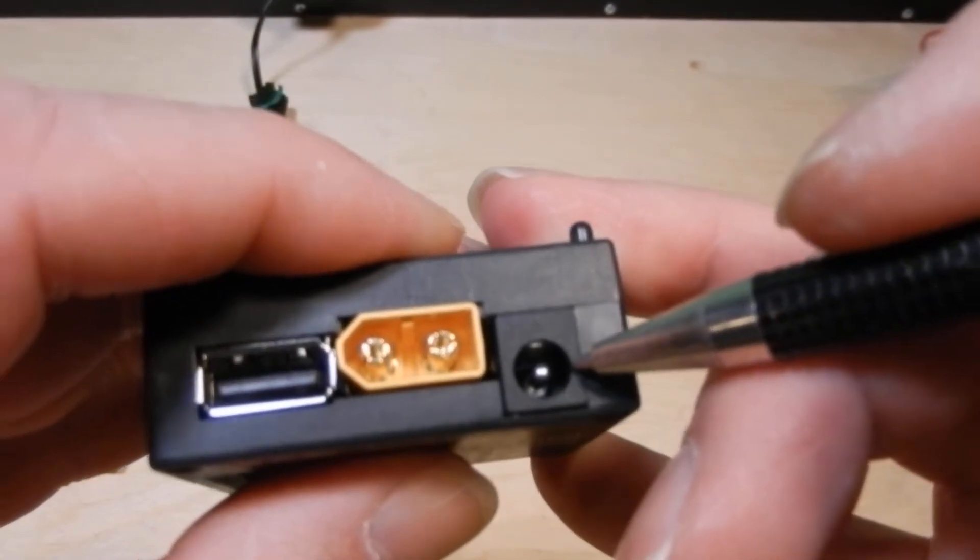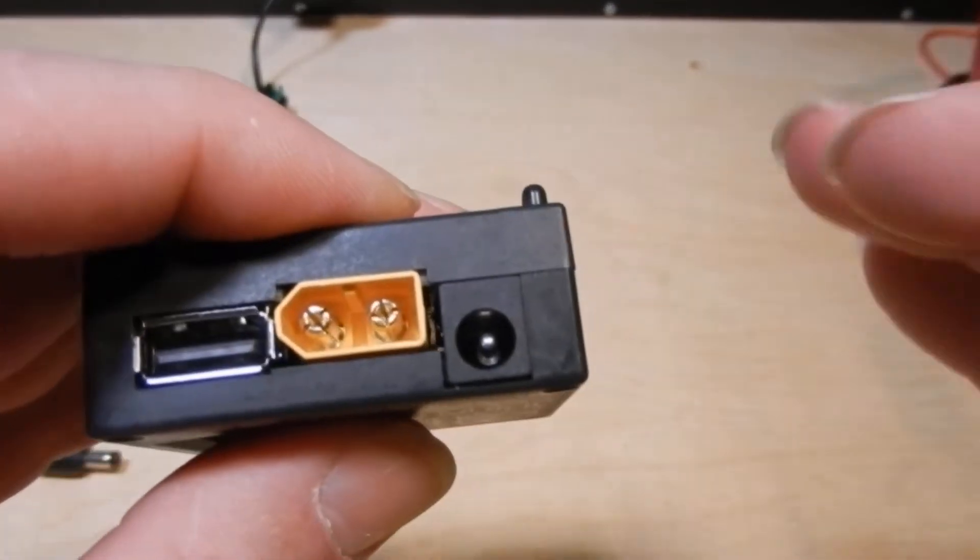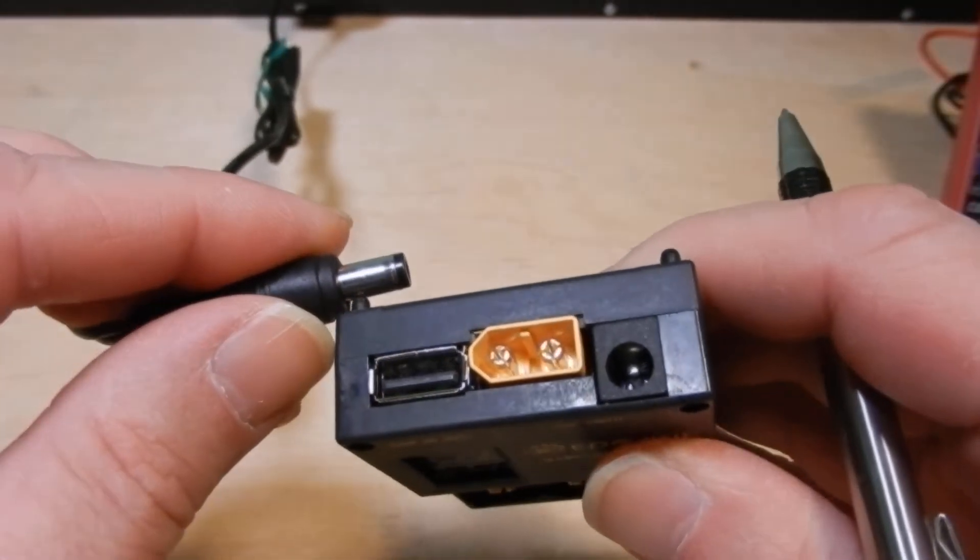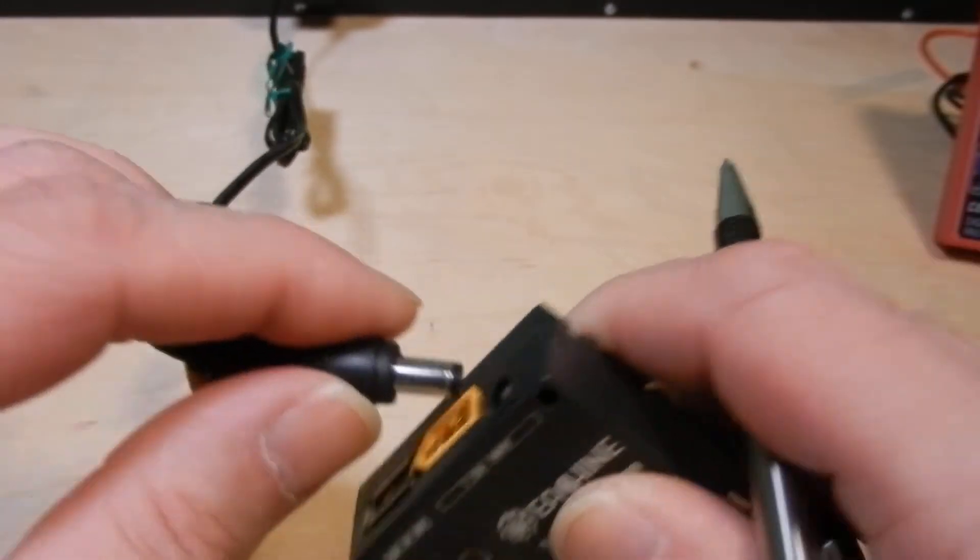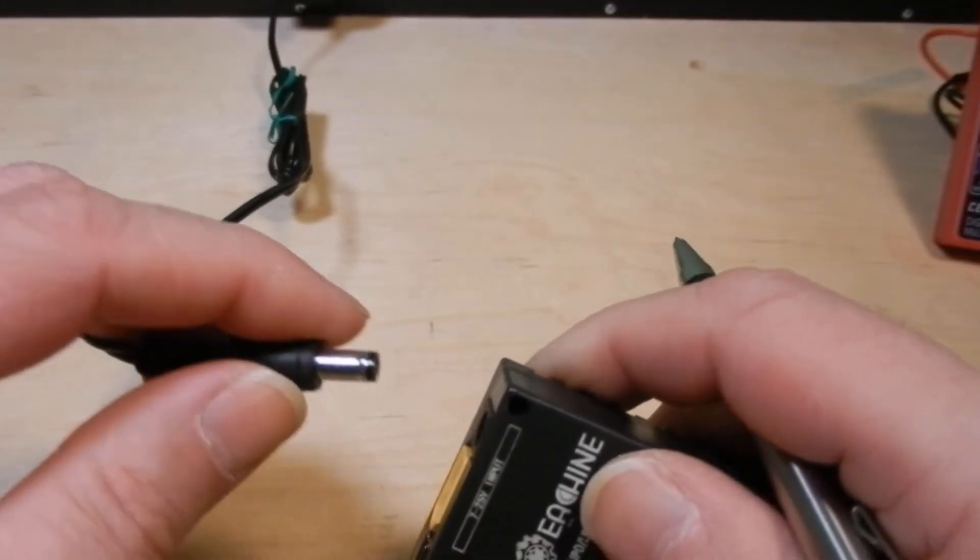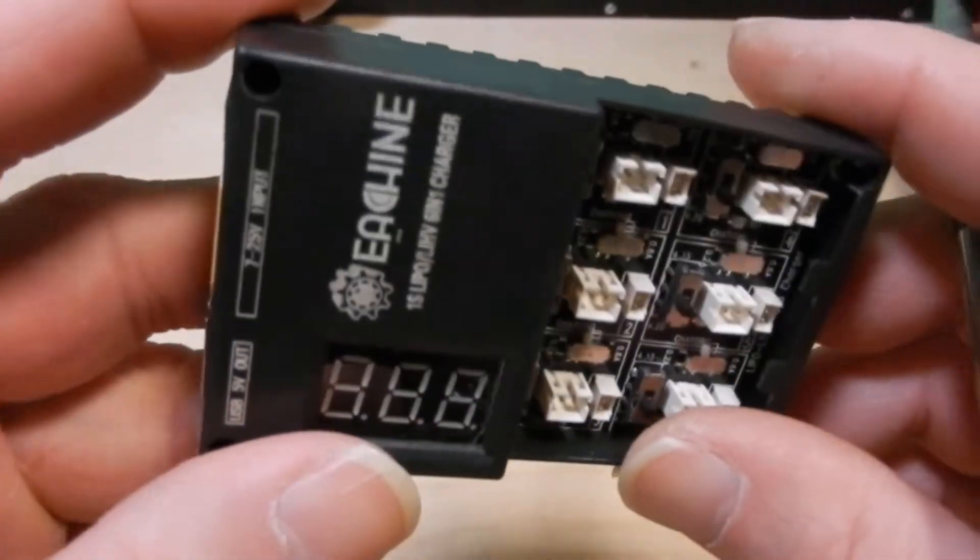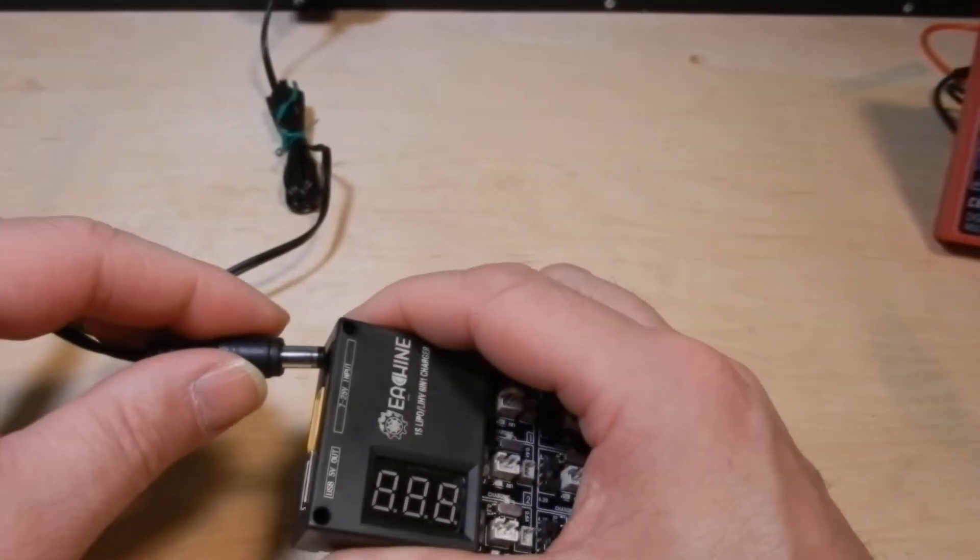Right here you have a barrel connector. It is a 5.5 millimeter by 2.1 inner. This one here is like 10 to 12 millimeters long, fits right in there without sticking out. So there's the gist of what it looks like. Let's plug this in.